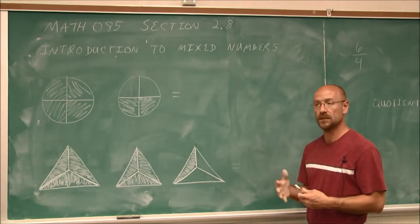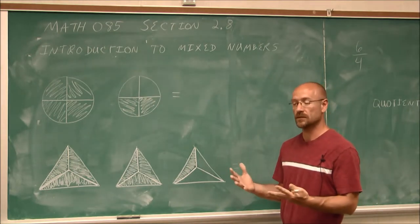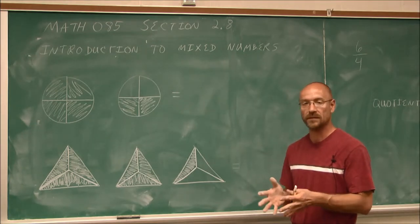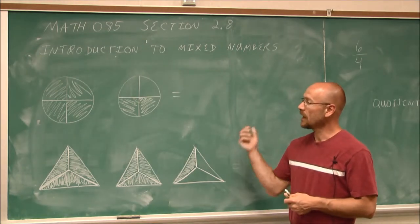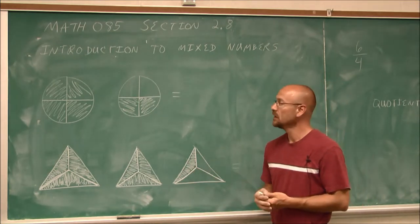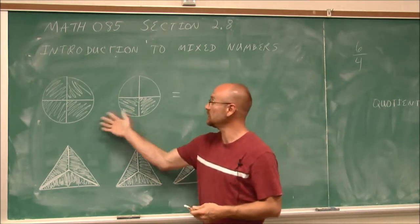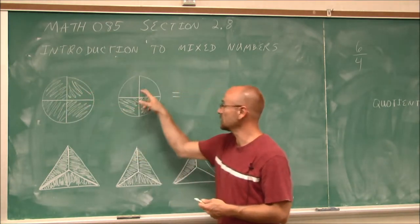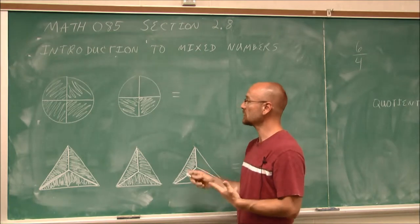In a previous section, we had the example of pizzas. If we purchase two pizzas and divide the pizzas into four pieces for each pizza, and in that example, six of the pieces were eaten. So if we think about this, these two circles will represent our pizzas. And we can see they're divided into four equal pieces.